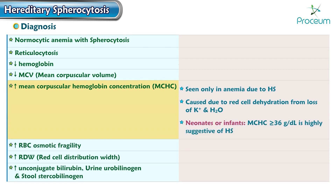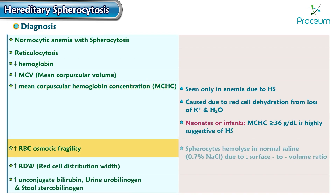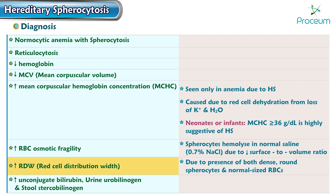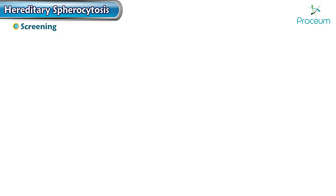In neonates or infants, an MCHC greater than or equal to 36 g/dL is highly suggestive of hereditary spherocytosis. Spherocytes hemolyze in normal saline due to their decreased surface-to-volume ratio. The increase in RDW is due to the presence of both dense, round spherocytes and normal-sized RBCs.